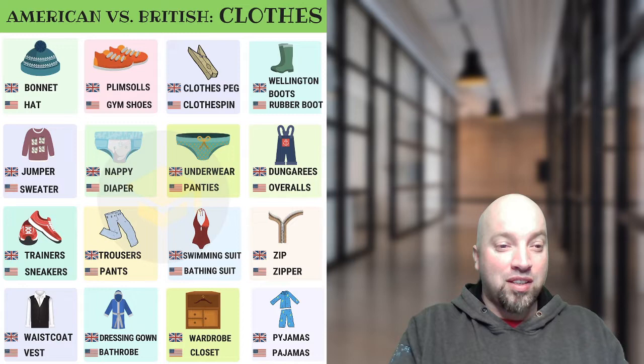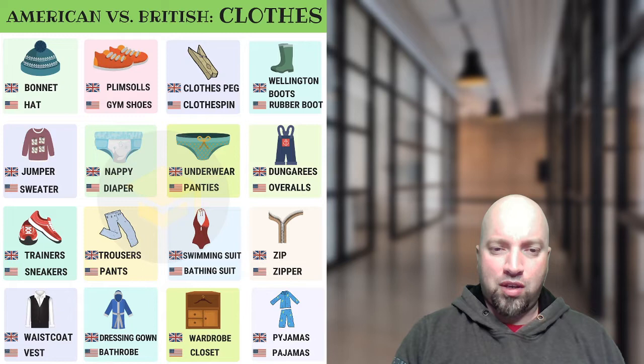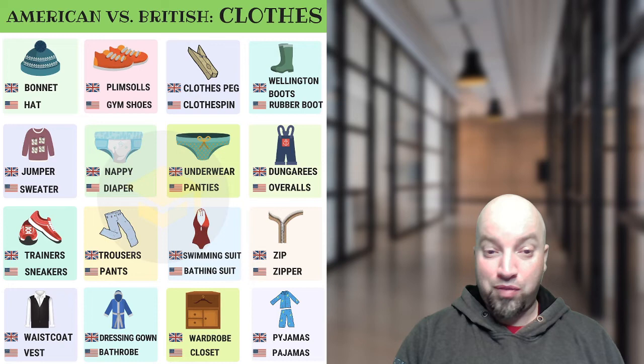The next one — the British would say 'nappy,' whereas the Americans would say 'diaper.' In Canada we would say 'diaper,' so so far we're really following along with what the Americans say as far as Canadians are concerned. Next one: they would say 'underwear' and 'panties.' In Canada, we would call anything you wear under your pants 'underwear' — that's the first one where we would say it just like the British. Ella says in Australia they'd call rubber boots 'gumboots.'